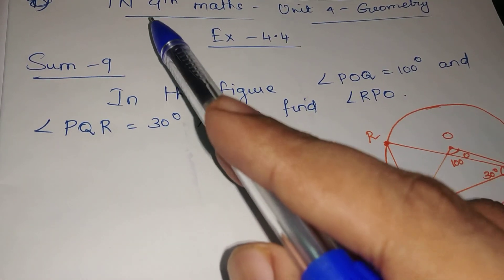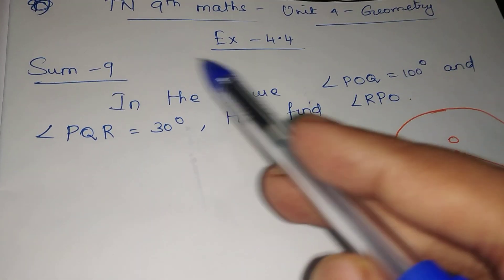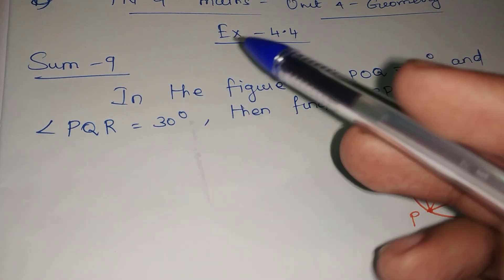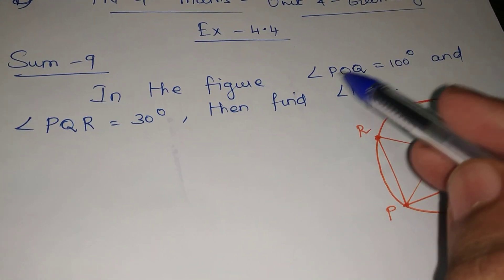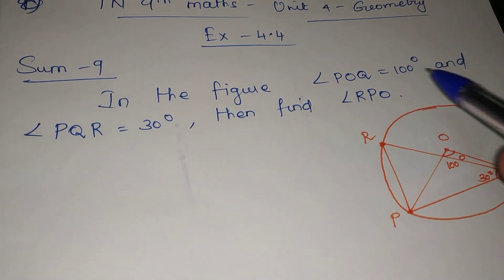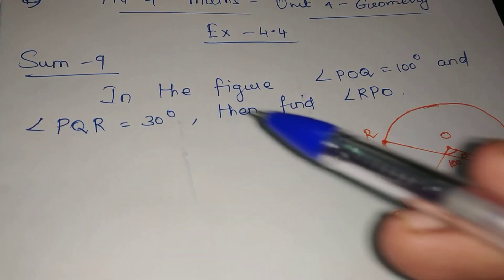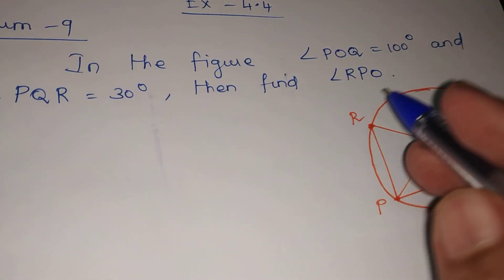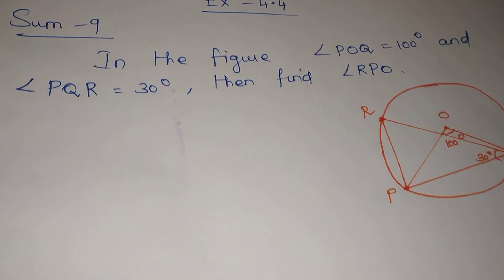Hi viewers, I am Abbas. This is Exercise 4.4, geometry. In the figure, angle POQ is equal to 100 degrees and angle PQR is equal to 30 degrees. Find angle RPQ.